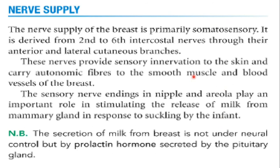The nerve supply of the breast is from the second to sixth intercostal nerves, coming from the intercostal spaces, through the anterior and lateral cutaneous branches. The sensory nerves are important, and hormones play a role in breastfeeding — a hormone known as prolactin, which is secreted by the pituitary gland, stimulates milk secretion.